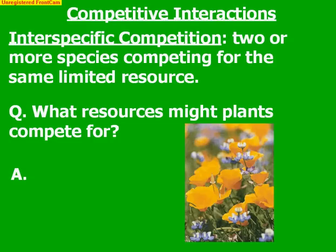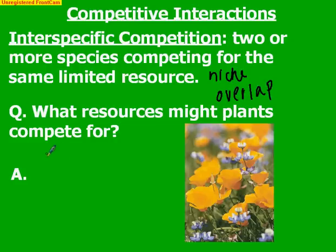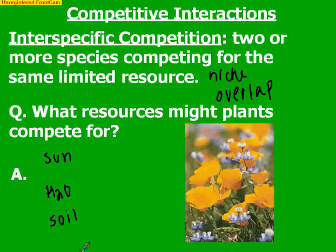Interspecific competition is when two or more different species are competing for the same limited resource, and again, this is because of a niche overlap. For example, plants are going to be competing for things like sunlight, water, soil, or carbon dioxide — anything that the organism needs to survive, chances are they're going to be competing for it.